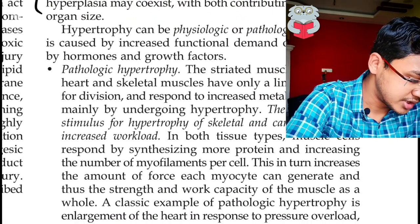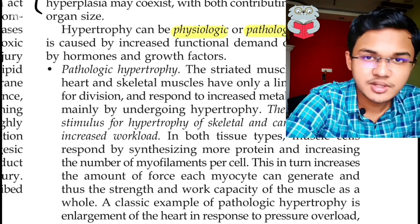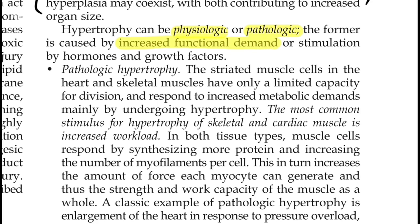Afterwards they have talked about the types of hypertrophy, which may be physiological or pathological. Physiological hypertrophy is because of increased functional demand or stimulation by hormones and growth factors. Striated muscle cells in the heart and skeletal muscles have only limited capacity for division and respond to increased metabolic demands mainly by undergoing hypertrophy. The most common stimulus for hypertrophy of skeletal and cardiac muscles is the increase in workload — this is printed in italics. The most common, the least common, the exceptions — all can be asked as an MCQ, so mark them.